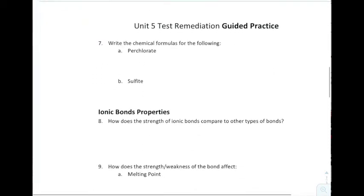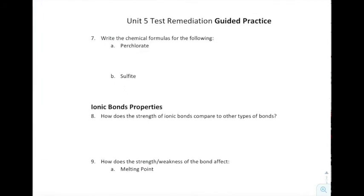Next it says, write the formulas for the following. Once again, this is just another thing that you have to memorize. Perchlorate is ClO4 minus, and sulfite is SO3 2 minus. Just memorization at this point.